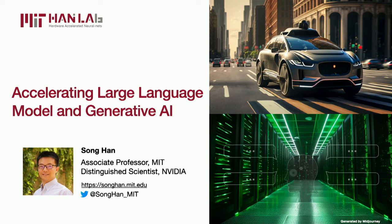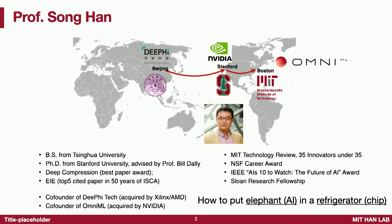Good afternoon everyone. My name is Song Han. I'm going to describe our research on accelerating large language models and generative AI. I joined MIT in 2018 and have been working on efficient deep learning computing. The problem is that neural networks and AI models are pretty large and we have limited compute capacity in the chip. How to put AI in the chip — how to put a big elephant in the refrigerator. I usually use this analogy to talk about my research.